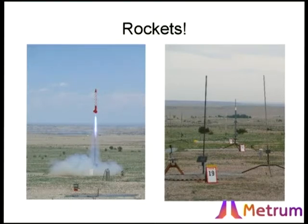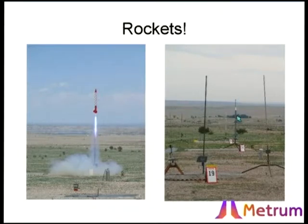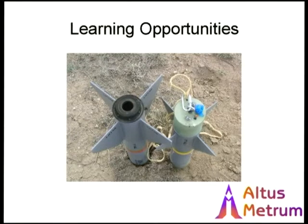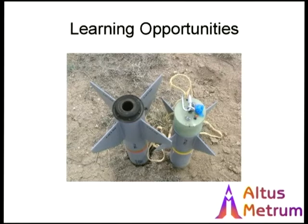Here's a rocket that BDL flew last spring at an event in Colorado, called AMRAAM — a model of an American military missile. He had a lot of fun building that. Unfortunately, we had some adventures that led to a learning opportunity. The rocket went up to about four kilometers, and not so much with the parachutes. It came straight down — this is how we found it, embedded in the dirt, about a foot into the ground on both pieces.